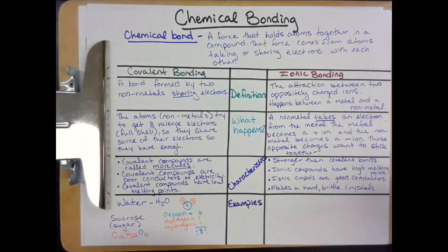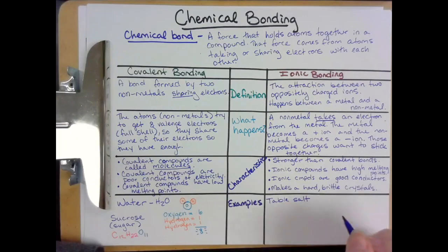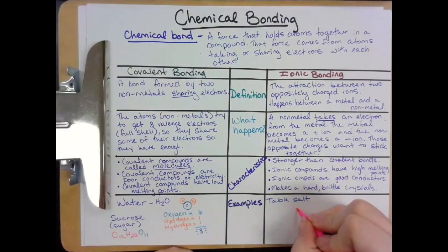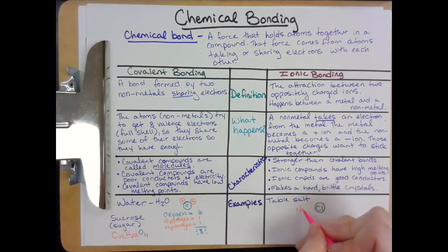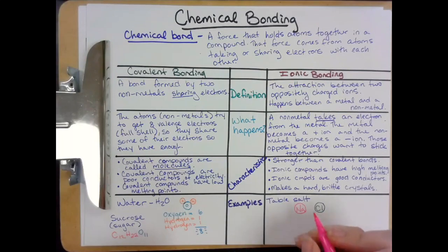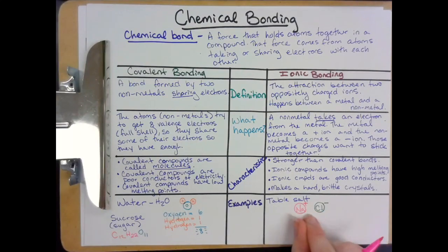One example of an ionic bond is table salt. Table salt is made of a metal — sodium, an alkali metal found in group one — and a nonmetal — chlorine, a halogen found in group 17. That chlorine snatches an electron away from the sodium. Sodium doesn't have enough negative charges, so it becomes a positive ion. The chlorine becomes negative, so it gets a minus sign. A positive charge and a negative charge attract each other, forming an ionic bond.